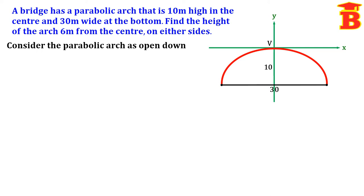We can now mark the points. Since the horizontal distance is 30, dividing by 2 gives 15. So from the center, the x-distance is 15 and the y-distance is 10. Since this point is below the x-axis, we mark it as minus 10. This is in the fourth quadrant — x is positive, y is negative. The other point is in the third quadrant: (−15, −10).